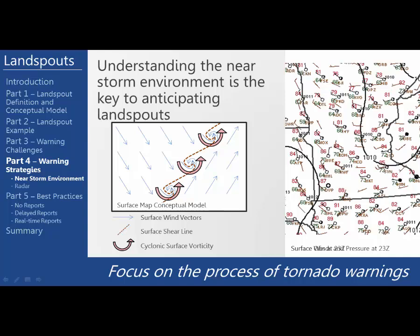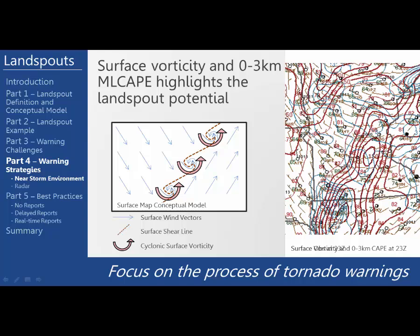Referring back to the surface map from our conceptual model and comparing it to the surface wind and pressure map from the SPC mesoanalysis page valid during our landspout — can you identify the areas of cyclonic surface vorticity? In this case, it's located along the wind shift from southwest Minnesota up through northwest Wisconsin. One of the best mesoanalysis maps is the surface vorticity and zero to three kilometer CAPE, which shows the potential for stretching cyclonic vorticity — exactly what happened where the tornado icon is located in southwest Minnesota.